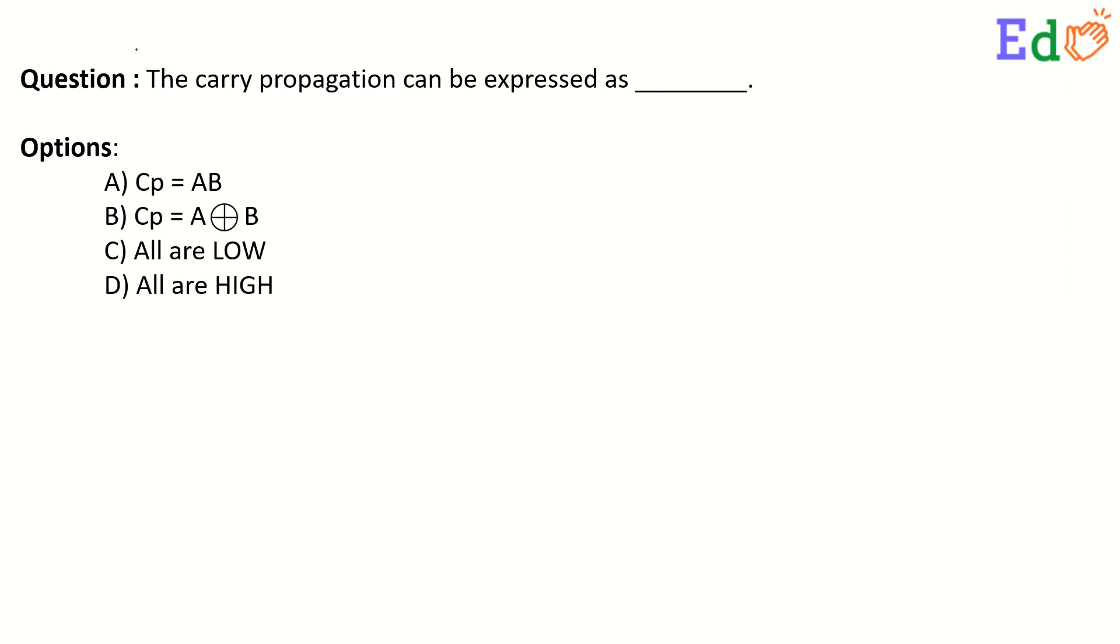Here is a simple fill in the blanks which states that the carry propagation can be expressed as dash. The options are: A) Cp = AB, B) Cp = A XOR B, C) all are low, and D) all are high.